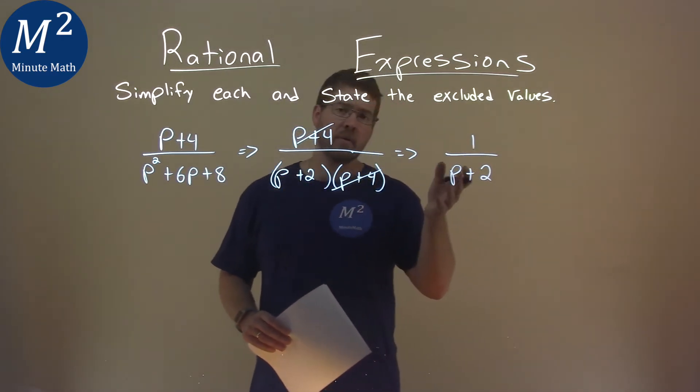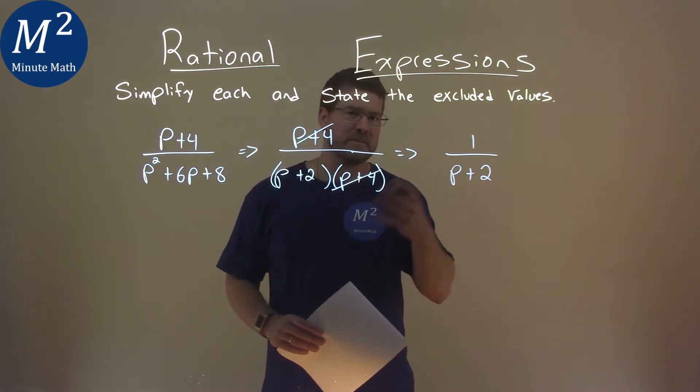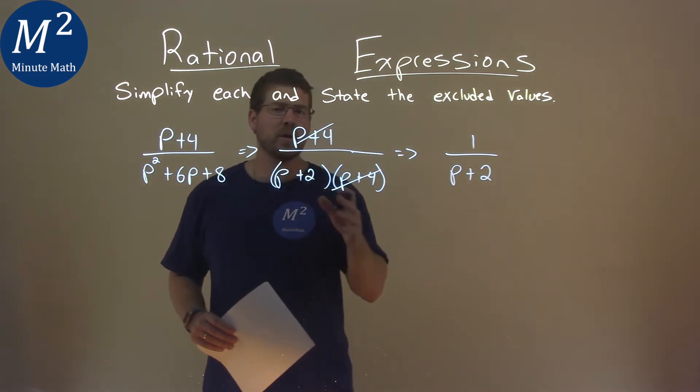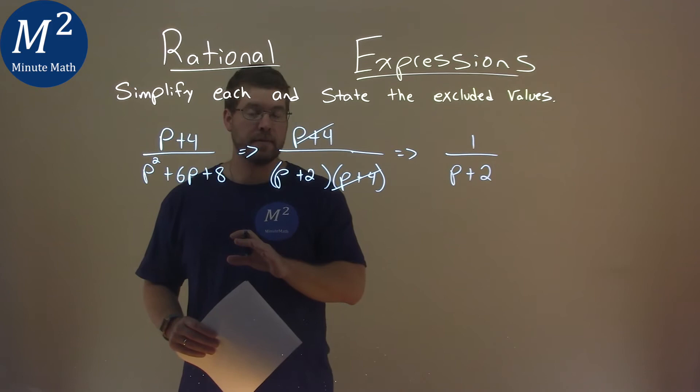And normally, you just look at the denominator with a rational expression and set it equal to 0, and you see what value for p comes up. But we have to include our original problem before we simplify it.